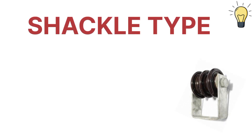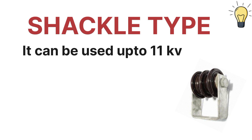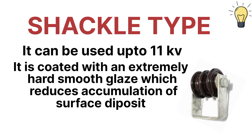The shackle type insulator can be used up to 11 kV and it is coated with an extremely hard smooth glaze that reduces the accumulation of surface deposits.